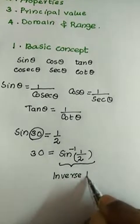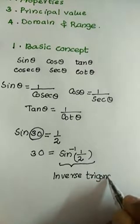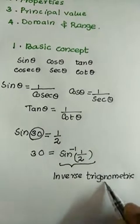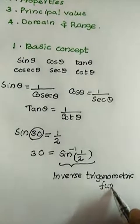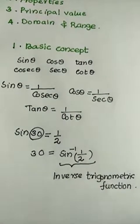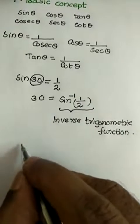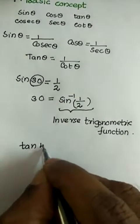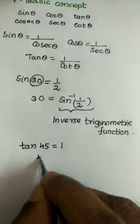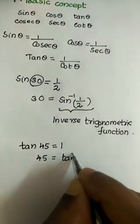I will give you another example. You know that tan 45 equals 1, and 45 can be written as tan inverse 1.